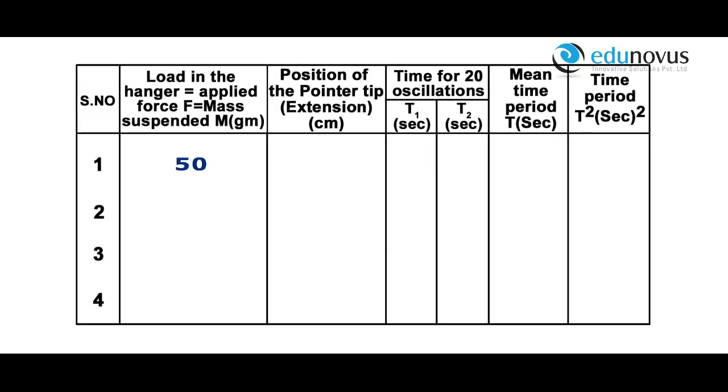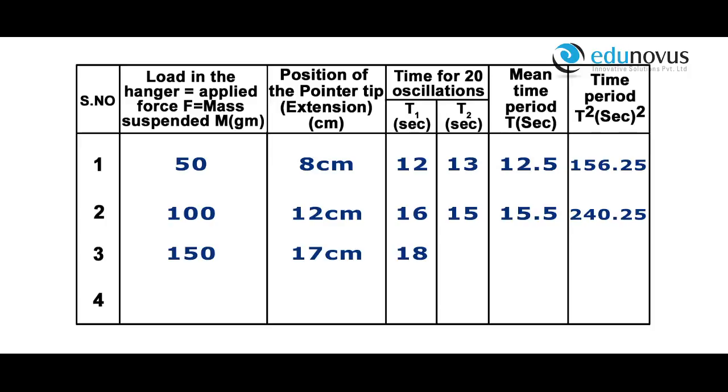For a load of 50 grams, the pointer position is 8 centimeters. Time for 20 oscillations: T₁ = 12 seconds, T₂ = 13 seconds. Mean time period T = 12.5 seconds and T² = 156.25. Similarly, record values for loads of 100, 150, and 200 grams.